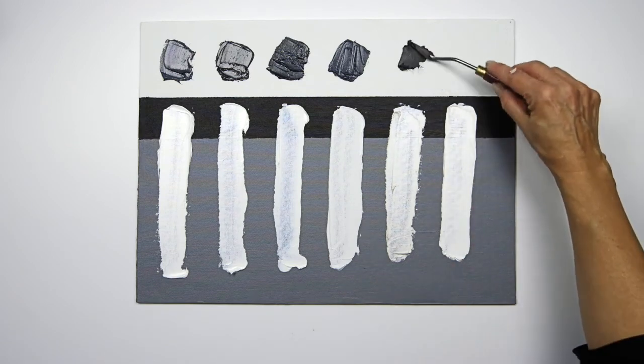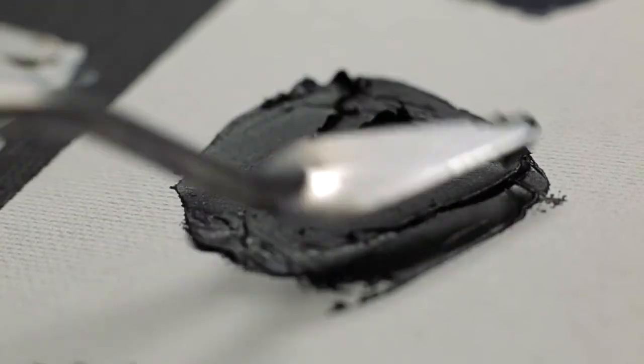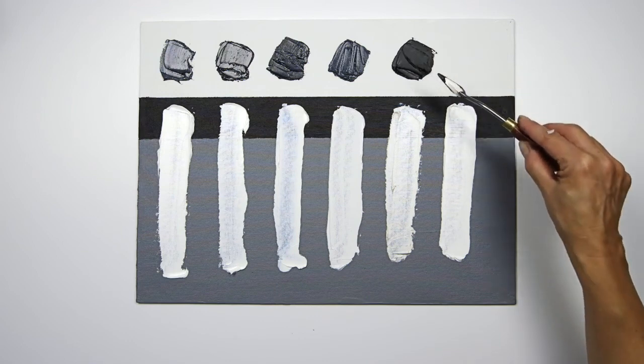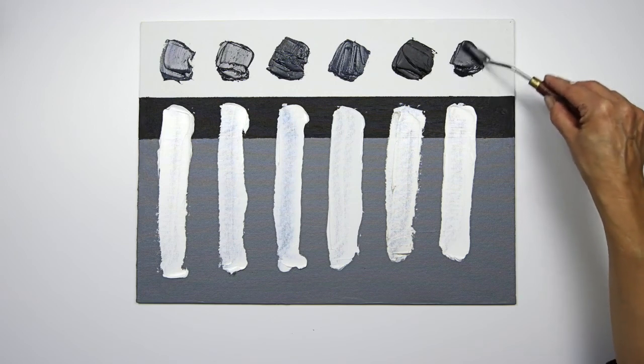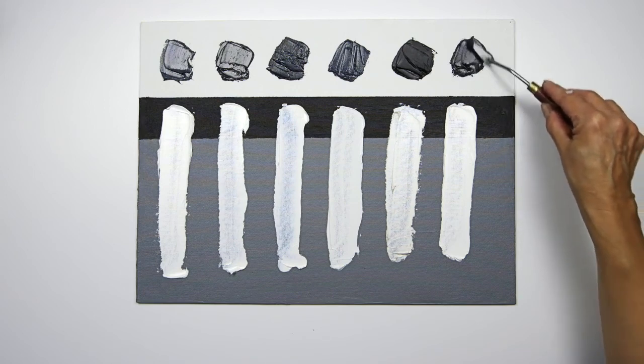With the iridescent white you can see there's a pearlescent sheen that's added to the Mars black. And with flake white you can see the warmth really coming through when you mix it with the Mars black.